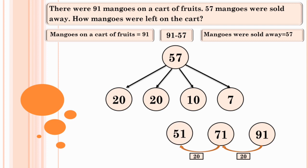51 minus 10 equals 41. 41 minus 7 equals 34. 34 mangoes.